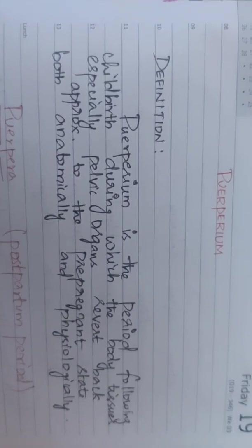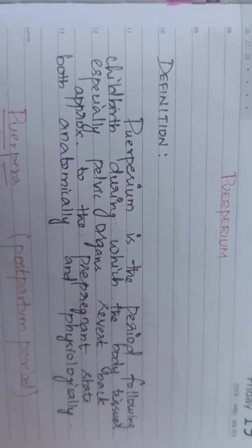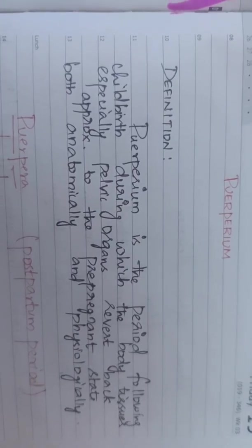Puerperium is the period following childbirth during which the body tissues, especially the pelvic organs, revert back approximately to the pre-pregnant state, both anatomically and physiologically.